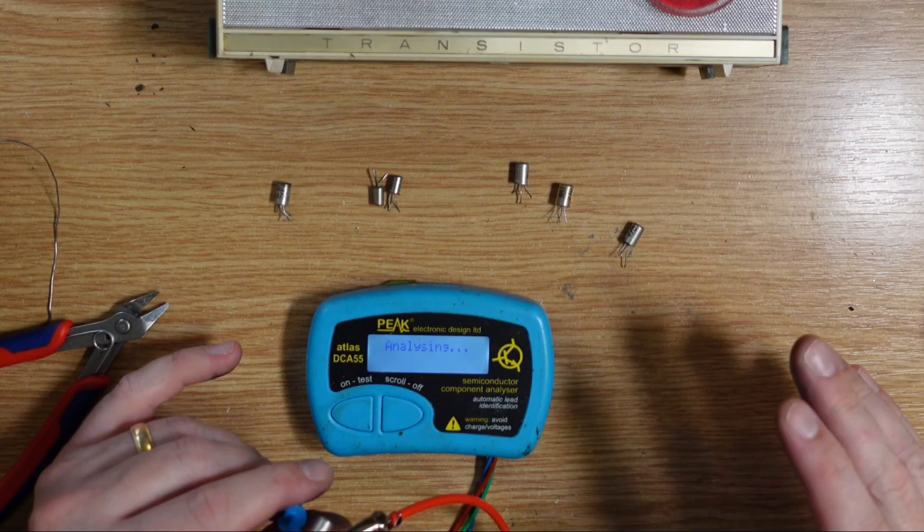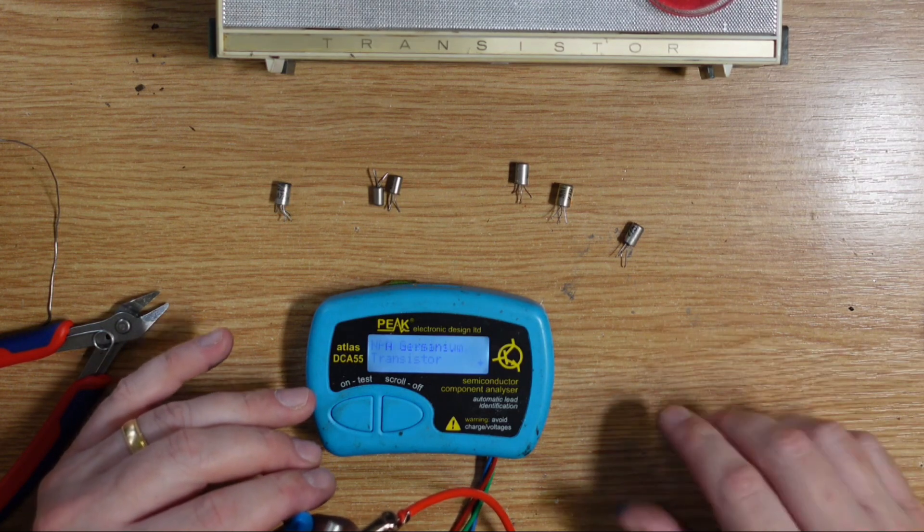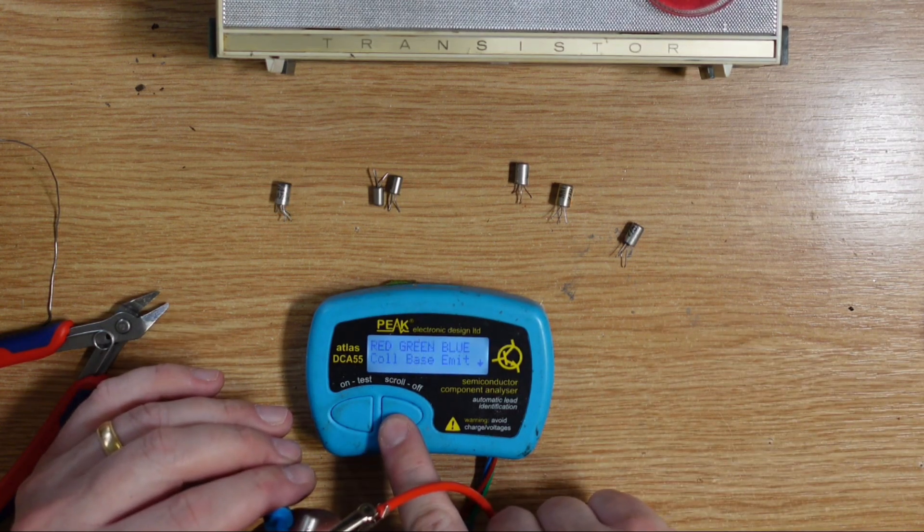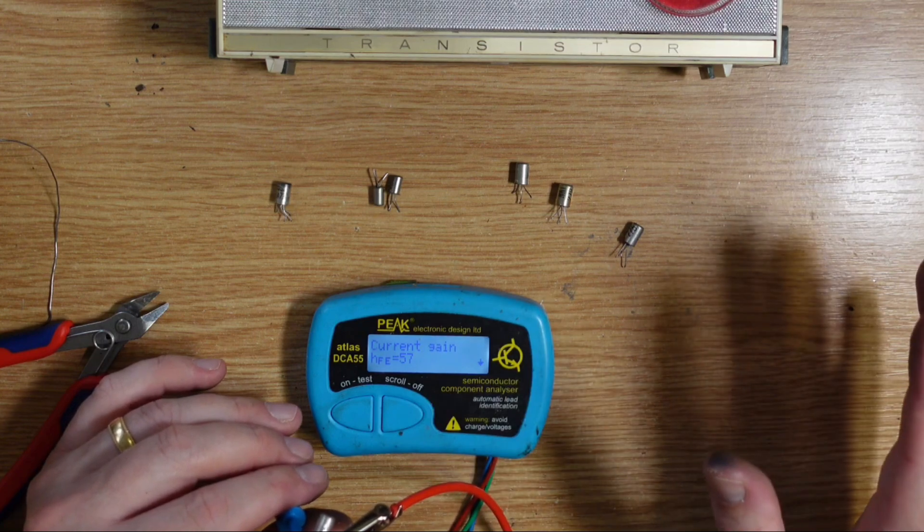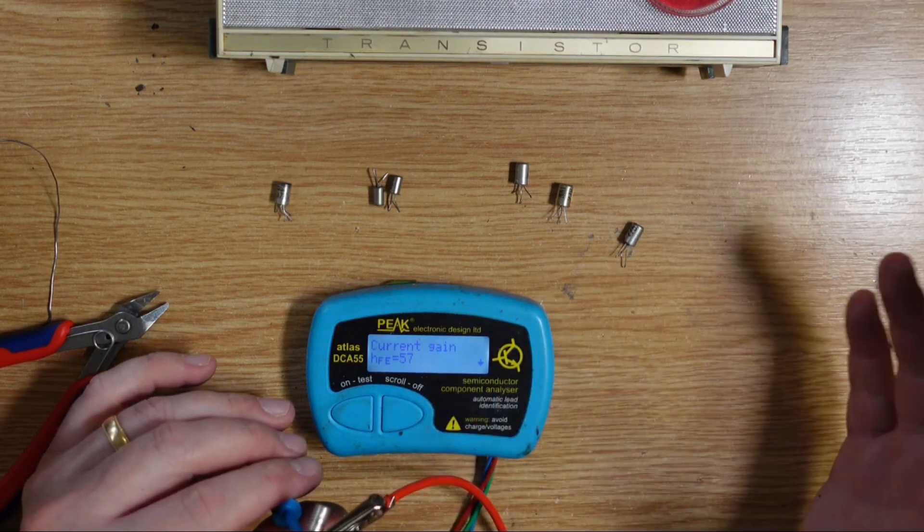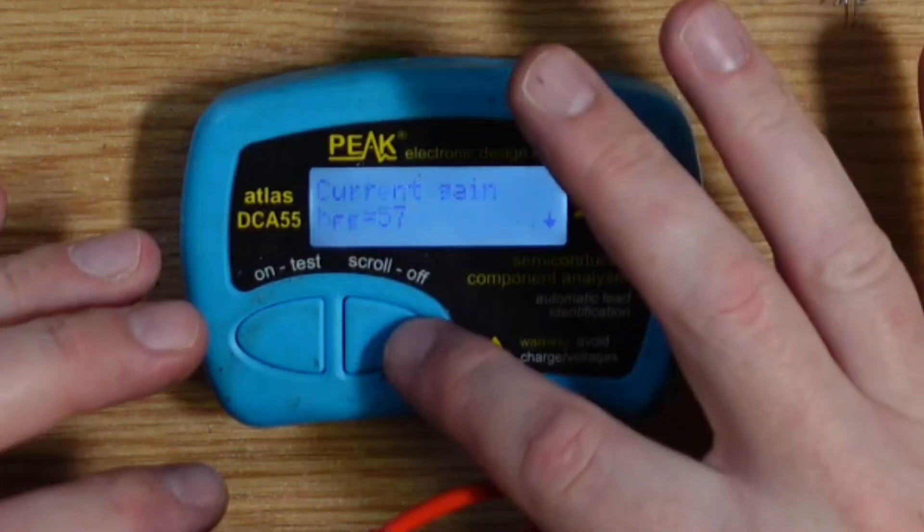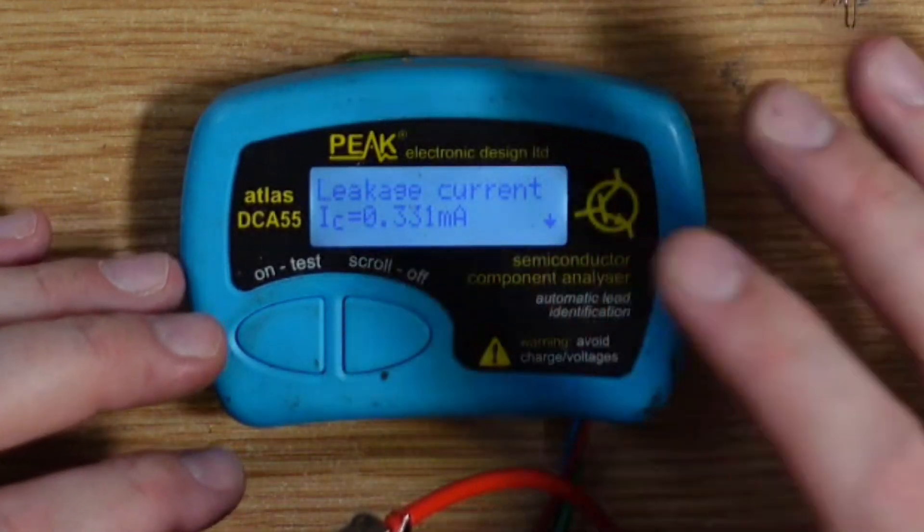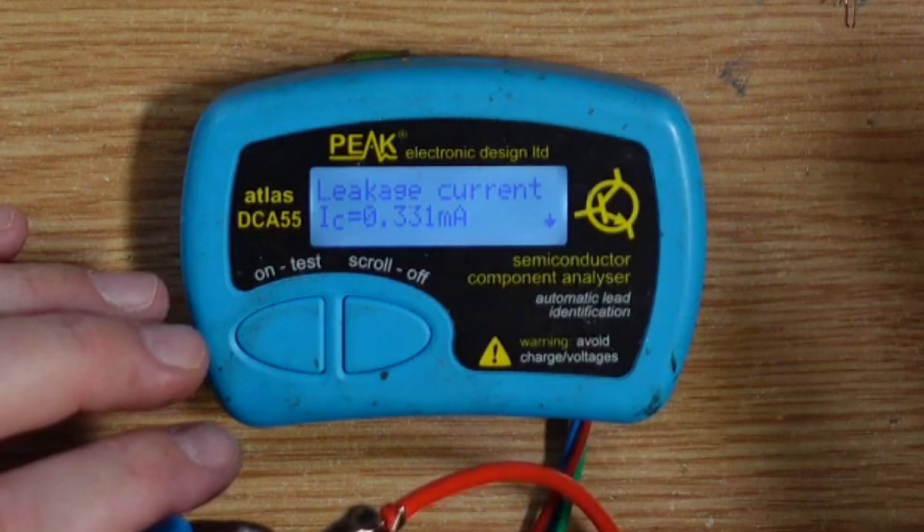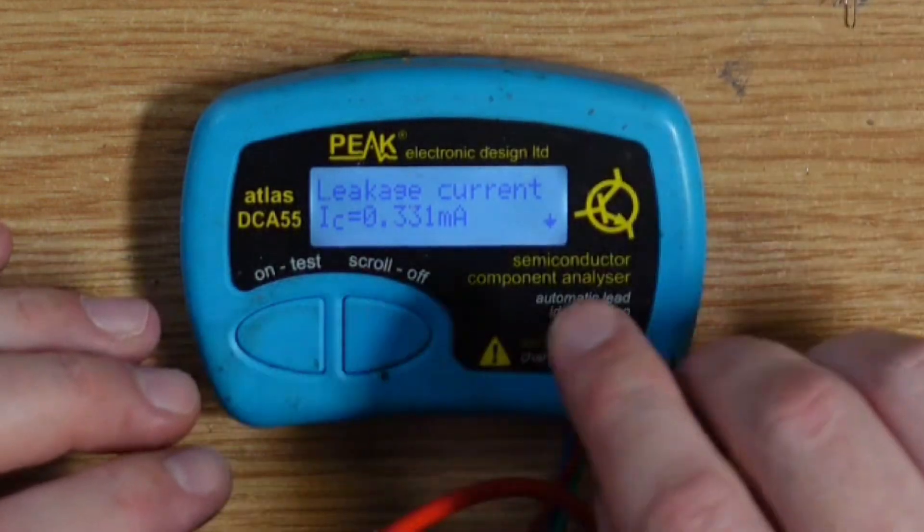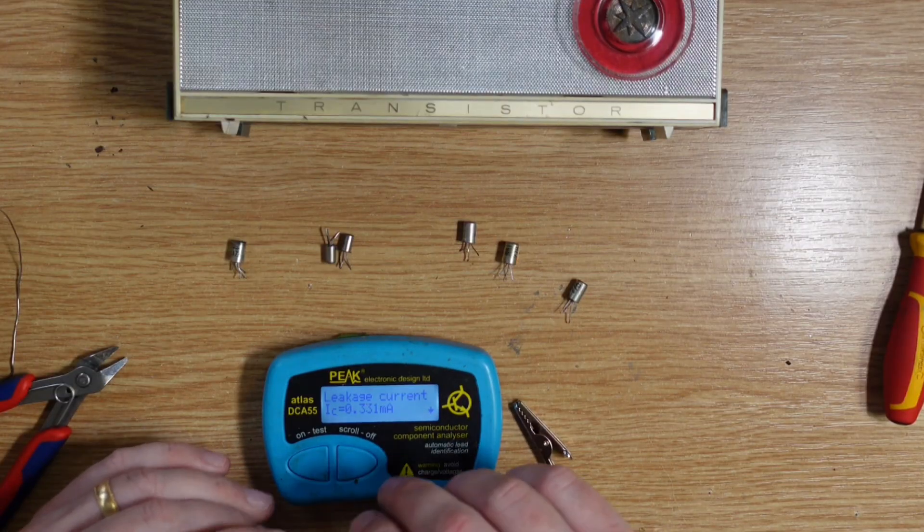We've already reclaimed two of them. And if we remember, they were around 200 HFE with 200 leakage as well. Sorry, they were about 150 HFE with 200 leakage. And here we see we've got 57 HFE, so a real low gain. Still could be used in a Range Master. And leakage of 331, which for me is unusable. So I won't be putting that in anything.